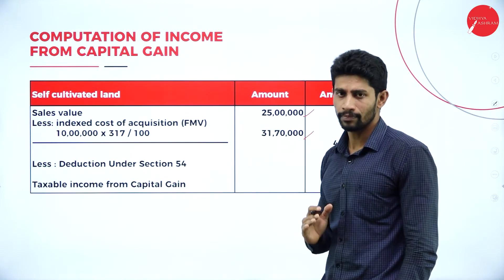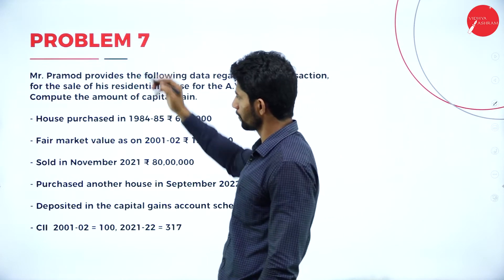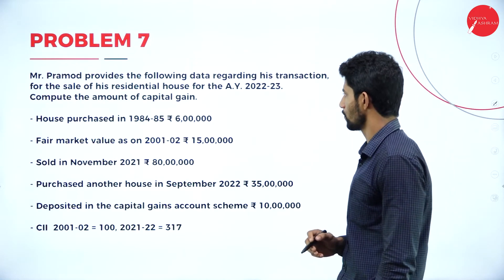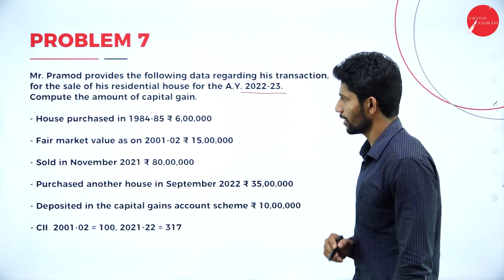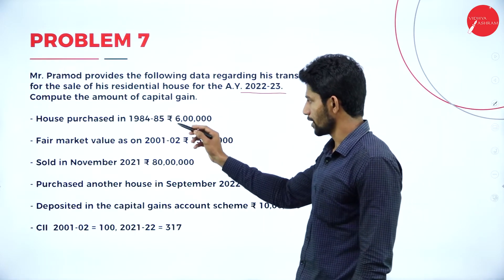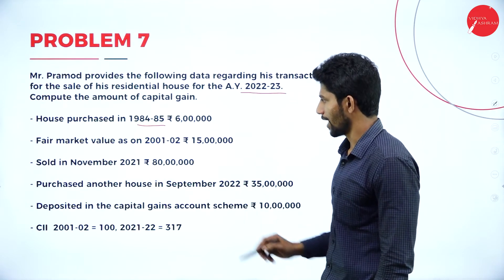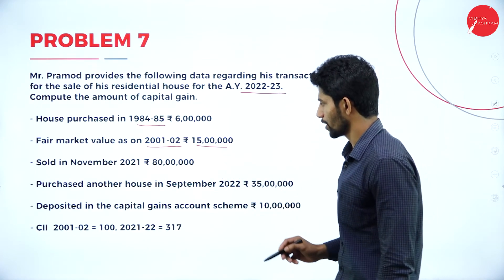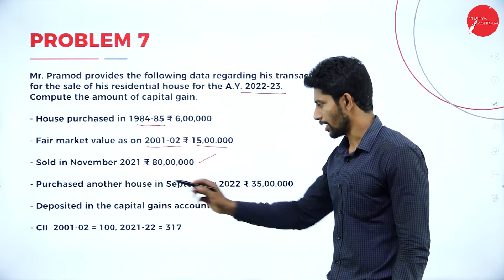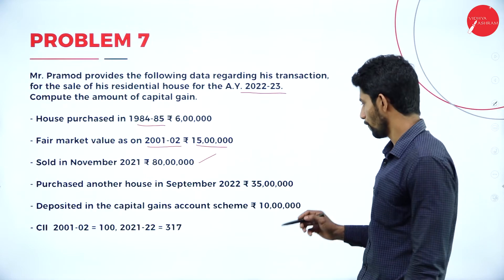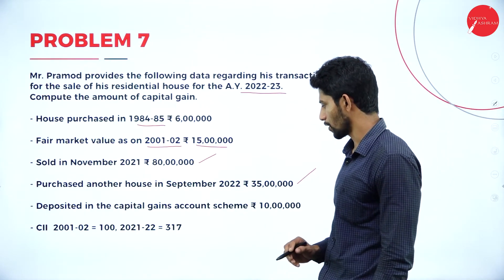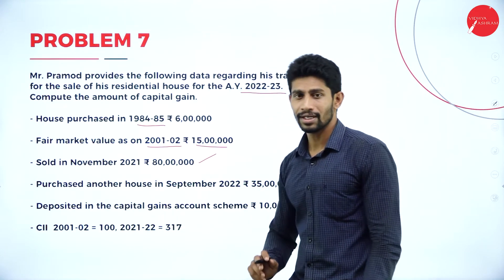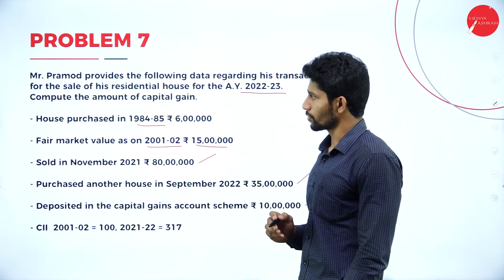Problem number seven: Mr. Pramoth provides the following data regarding his transactions for the sale of his residential house for Assessment Year 2022-23. House purchased in 1984-85 for rupees 6 lakhs; fair market value as on 2001-2002 is rupees 15 lakhs; sold in November 2021 for rupees 80 lakhs; purchased another house in September 2022 for rupees 35 lakhs; and deposited rupees 10 lakhs in the Capital Gain Account Scheme. CII values given for 2001-02 (100) and 2021-22 (317).